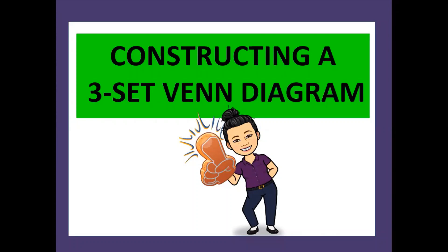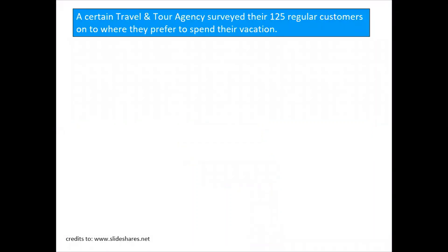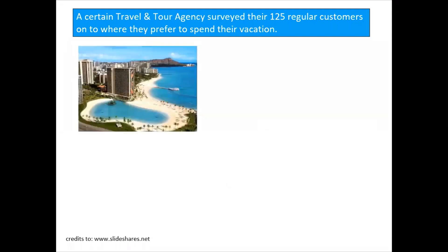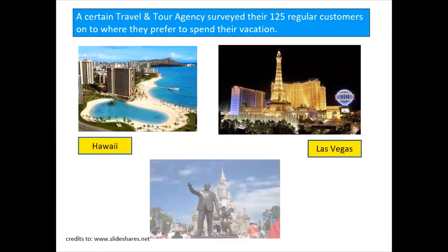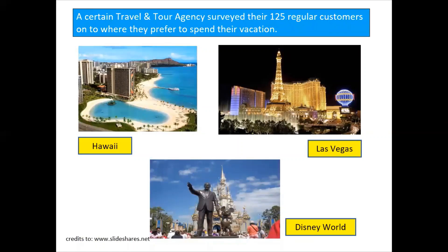Let us discuss constructing a 3-set Venn diagram, then use this diagram to answer the questions in the problem. A certain travel and tour agency surveyed their 125 regular customers on where they prefer to spend their vacation, whether they go to Hawaii, Las Vegas, or Disney World.